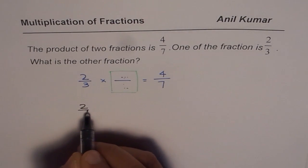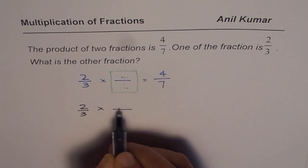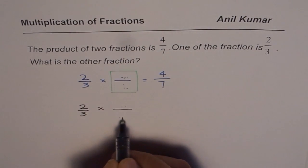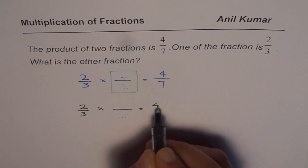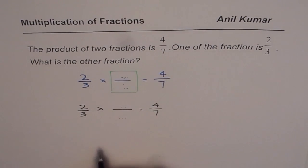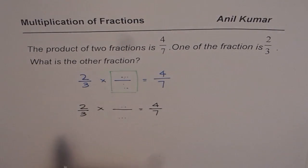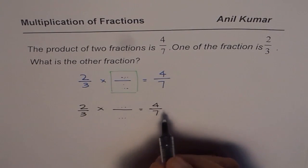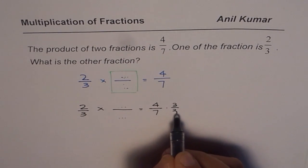We have 2 over 3 here times something. We don't know what this is. We need to find that equals 4 over 7. Now we could think like this. How about multiplying this by 3 over 3.